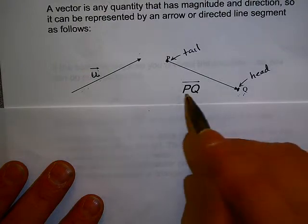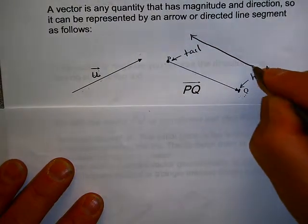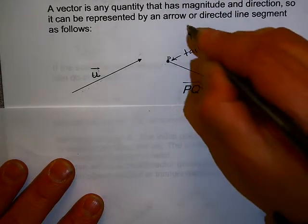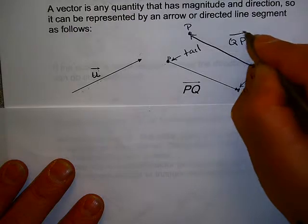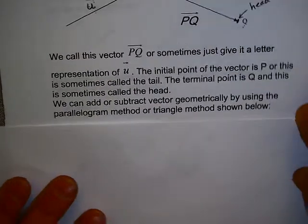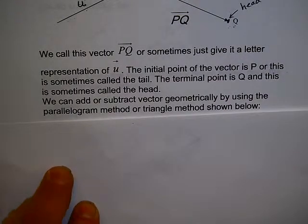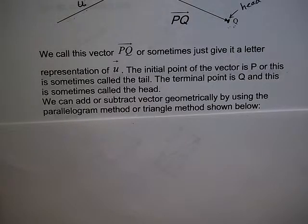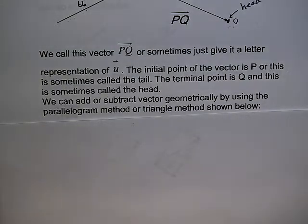We represent this as PQ. That is very different than QP, which might look like this — notice that helps us indicate the direction of our vector. So we call this vector PQ, or sometimes give it a letter representation of u. The initial point of the vector is P, sometimes called the tail. The terminal point is Q, sometimes called the head.